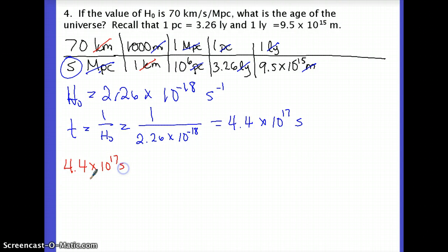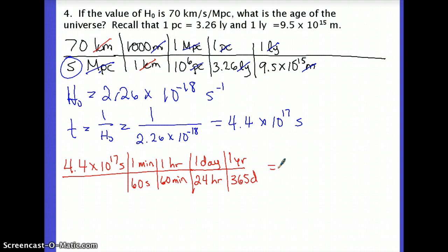4.4 times 10¹⁷ seconds. There's 60 seconds in a minute, 60 minutes in an hour, 24 hours in a day, and 365 days in a year. And what I get is 1.4 times 10¹⁰ years. That's 14 billion years.